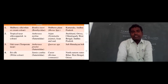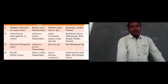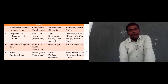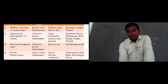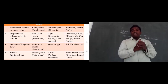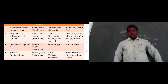Tropical tassar silk: the scientific name is Antheraea mylitta, family Saturniidae. The silk is copperish in color. This silkworm eats Arjuna leaves (Terminalia arjuna), Asan leaves, and Sal leaves. The tassar silk industry is located in Jharkhand, Orissa, Chhattisgarh, West Bengal, and Andhra Pradesh.